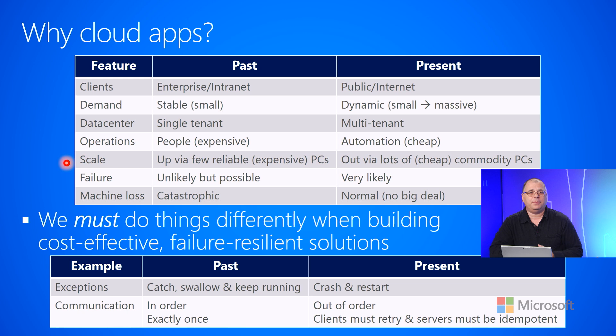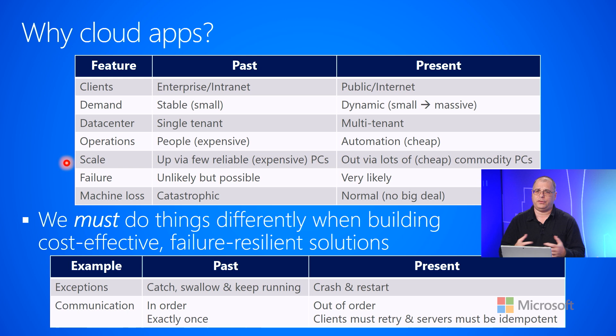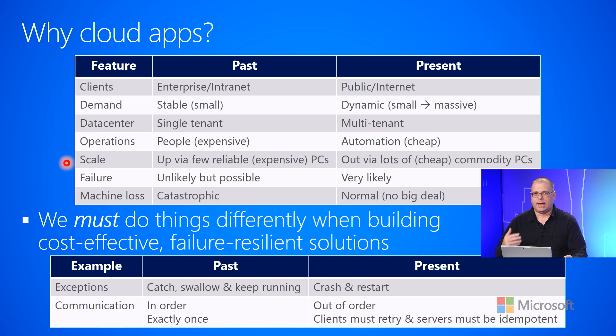Now let's talk about the scale feature, which is closely related to demand. In the past, your service would run on a few reliable but expensive PCs — machines with lots of CPU cores, lots of RAM, and very fast hard disks. In this new mindset, we're trying to use lots of cheap, inexpensive, commodity PCs instead. And with cheap hardware, we just assume that failure is going to happen — something we'll be talking about over and over throughout this whole course.